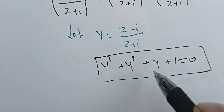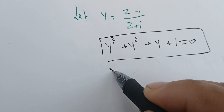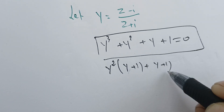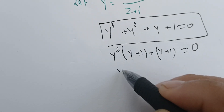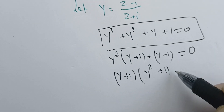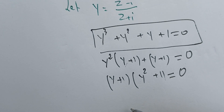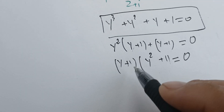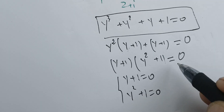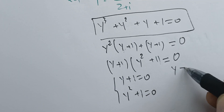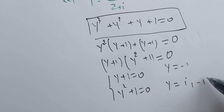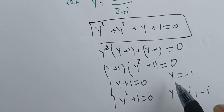We can solve this equation by factoring. We factor out y squared to get y squared times (y plus one), plus (y plus one) equals zero. Then we factor out (y plus one) to get (y plus one)(y squared plus one) equals zero. This gives us y plus one equals zero, or y squared plus one equals zero, so y equals minus one, i, or minus i.